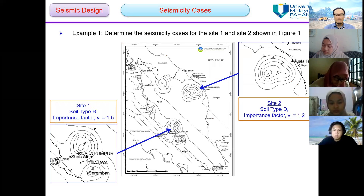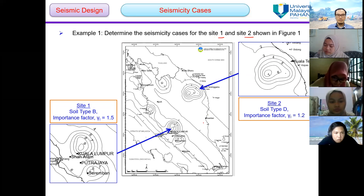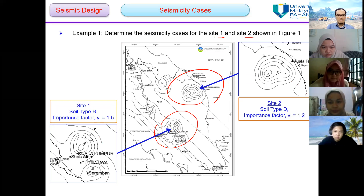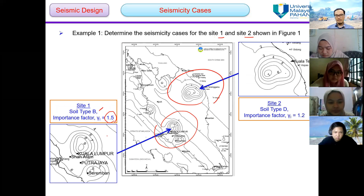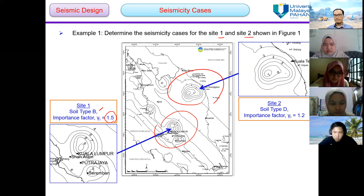As an example, here is example number 1: determine the seismicity cases for site 1 and site 2 shown in the figure. For site number 1, the soil type considered is soil type B and the importance factor is 1.5. Can you give me an example of what building can be considered under importance factor 1.5?